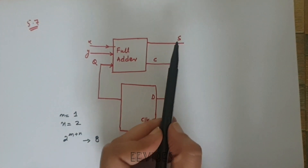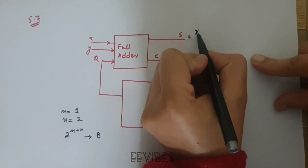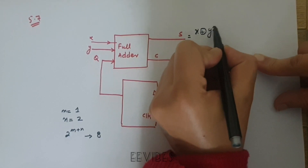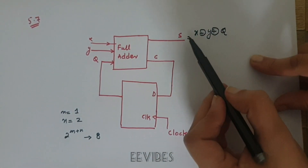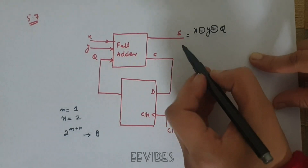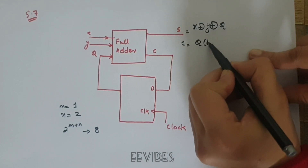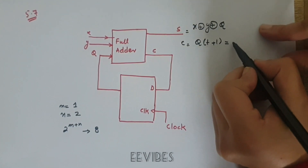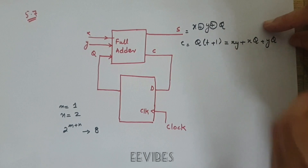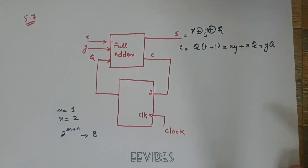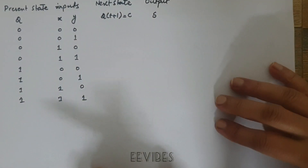The sum function for the full adder is: S equals x XOR y XOR Q. This is the Boolean expression for the sum. Similarly, the carry function — which determines the next state of the flip-flop — is written as: xy plus xQ plus yQ.